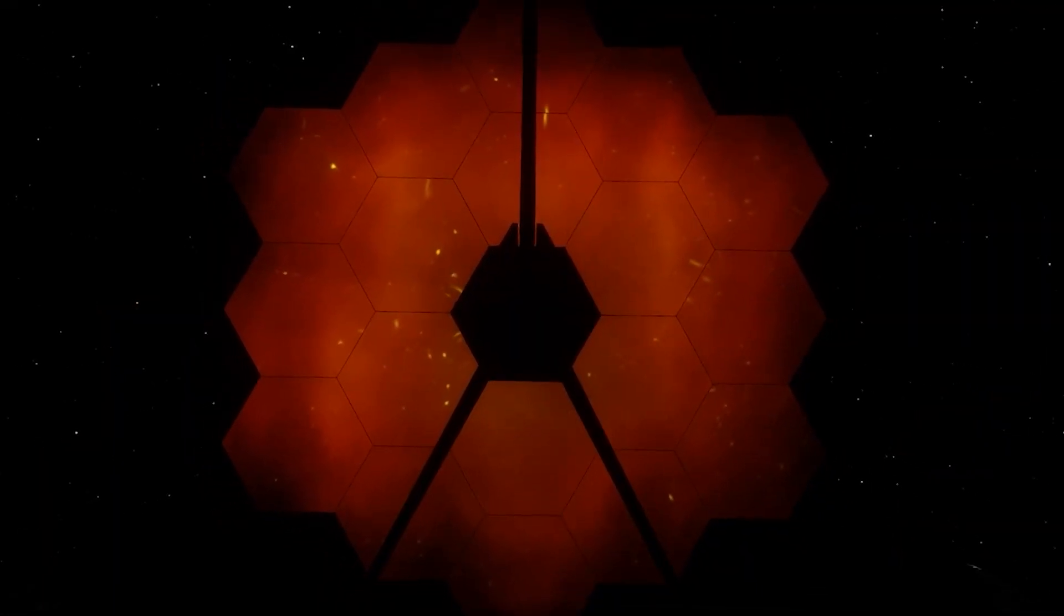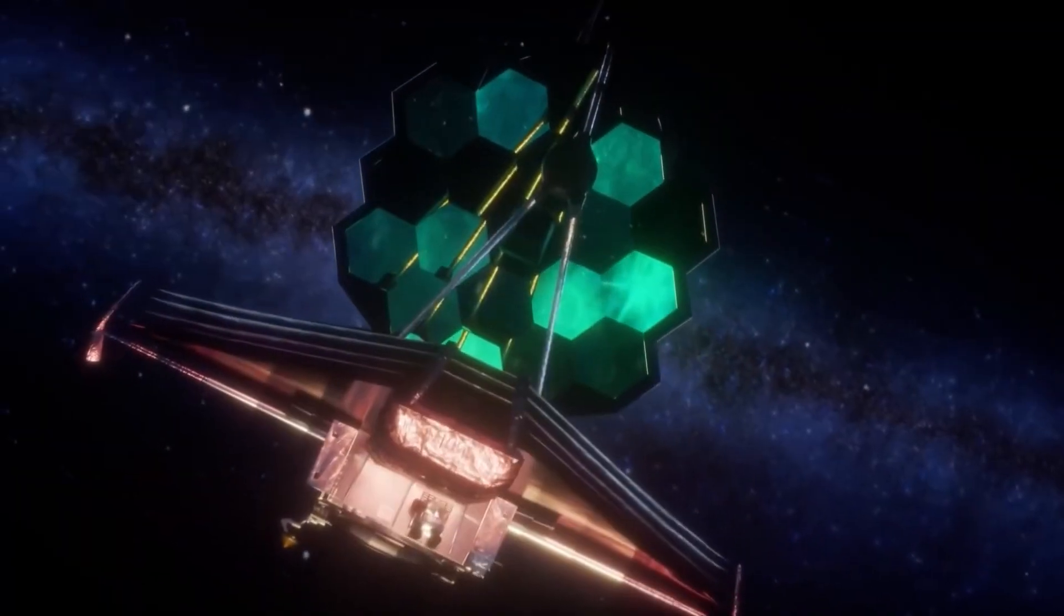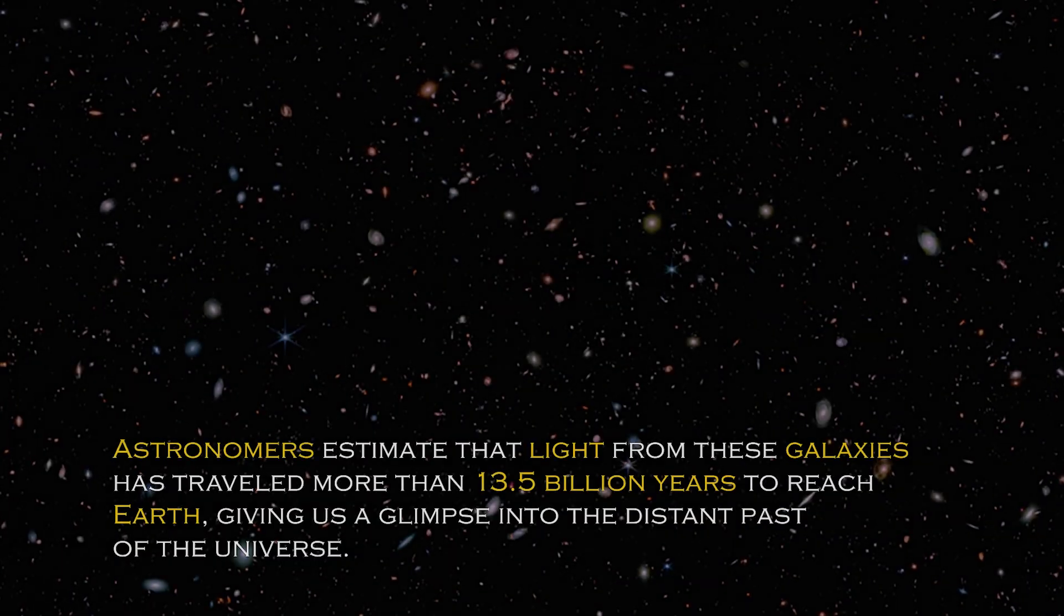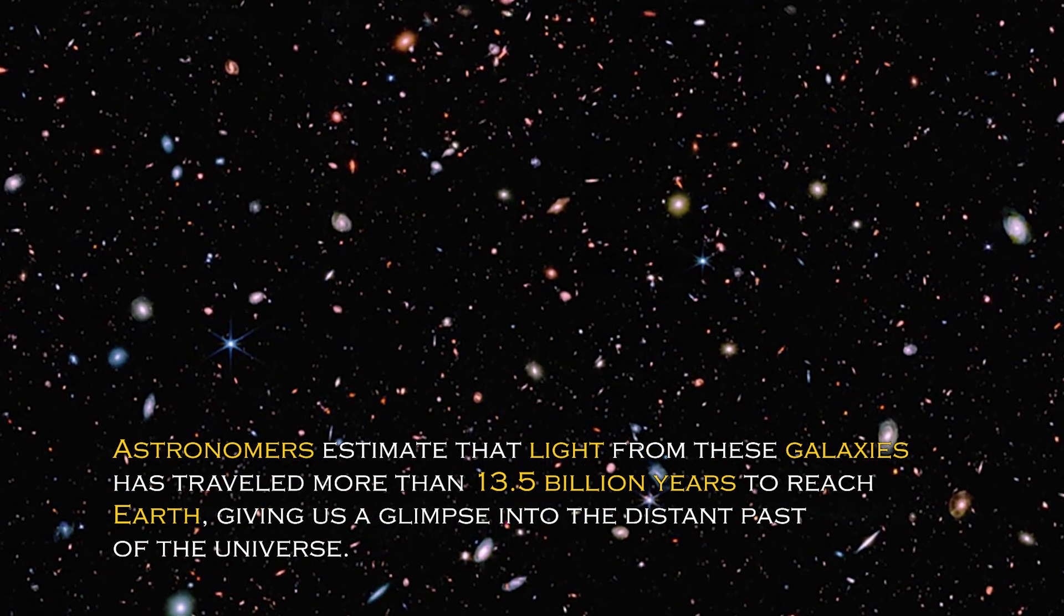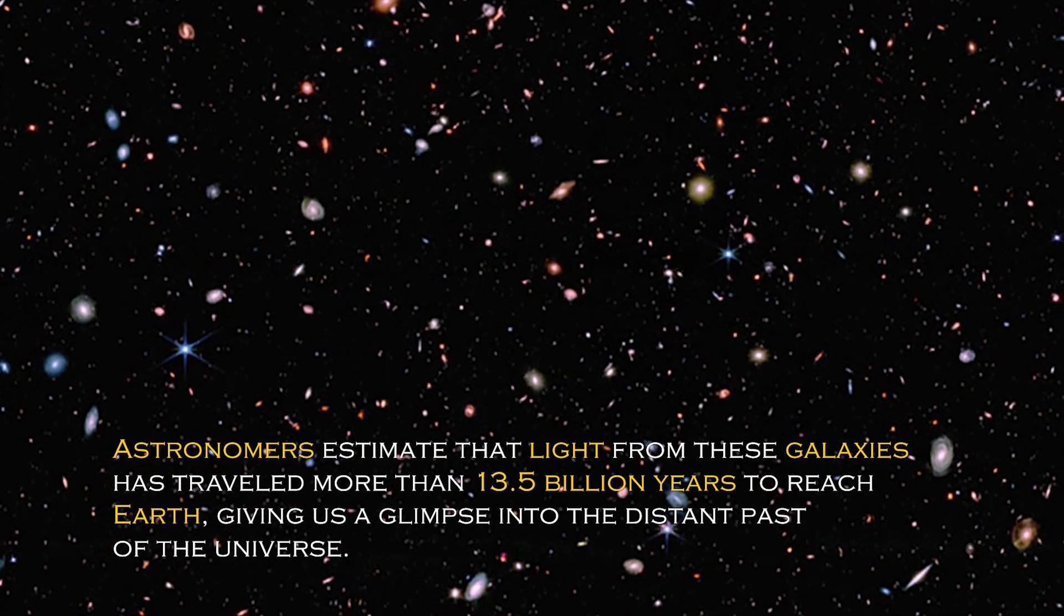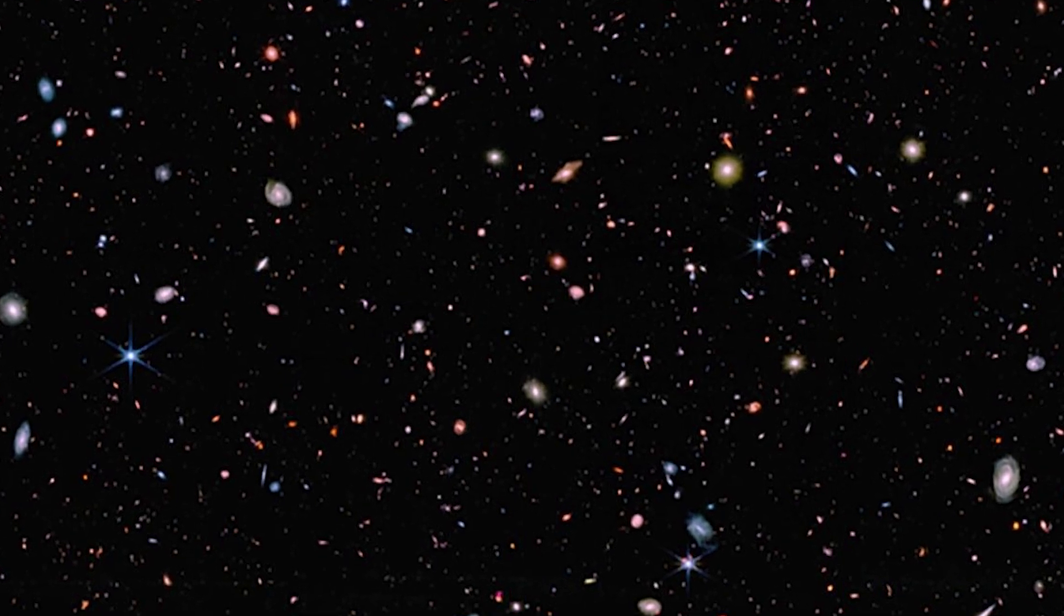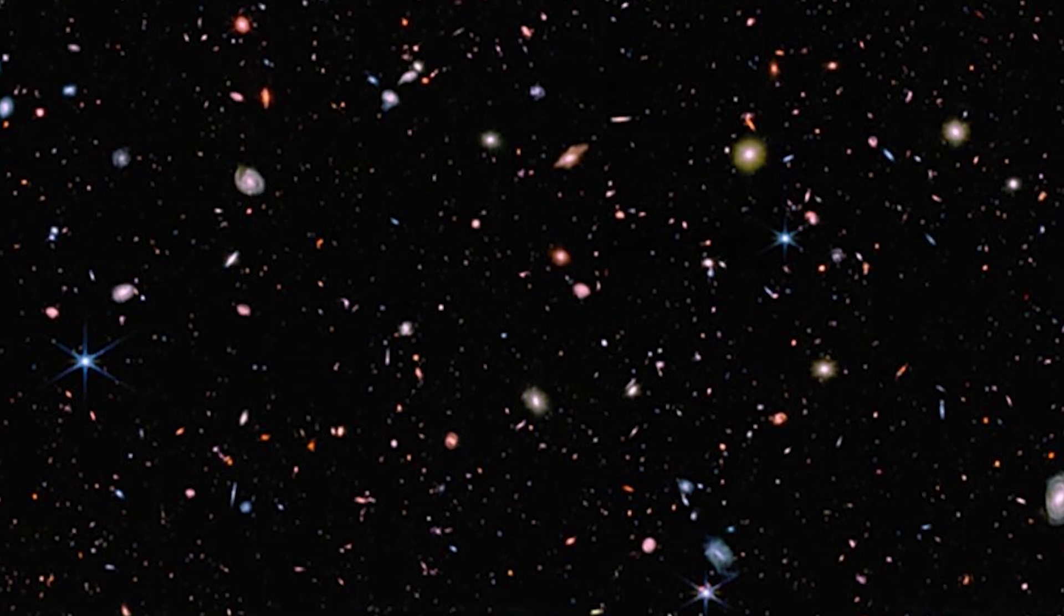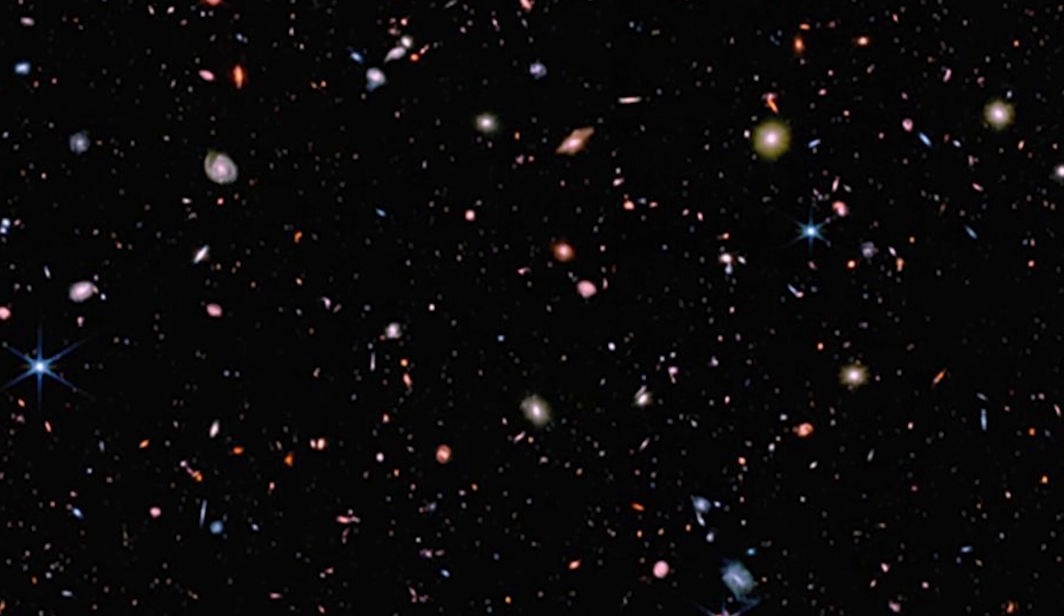Amazingly, the James Webb Space Telescope confirmed that these ancient galaxies are real. Thanks to this revolutionary telescope, we can now observe the oldest galaxies ever seen. Astronomers estimate that light from these galaxies has traveled more than 13.5 billion years to reach Earth, giving us a glimpse into the distant past of the universe. These galaxies were discovered when the universe was young, which sheds light on how quickly the first generations of galaxies emerged. The spectral data confirmed that these galaxies are at the edge of our view, some even farther away than Hubble could see.